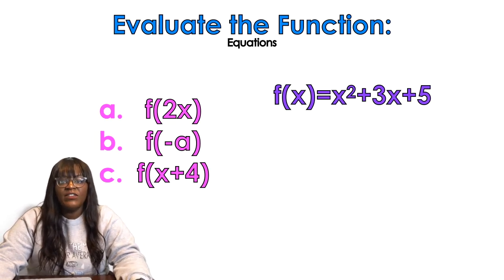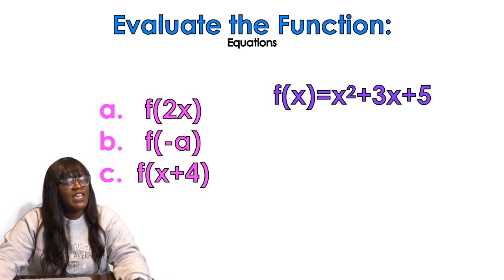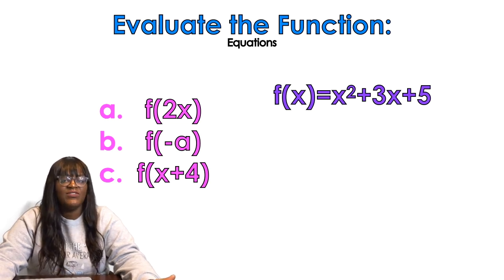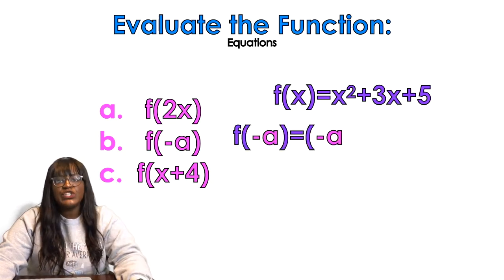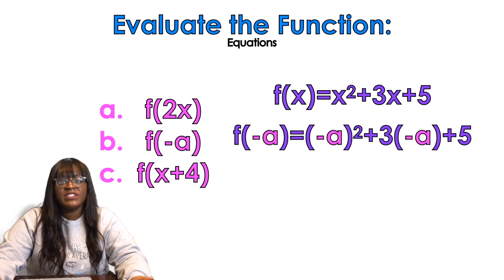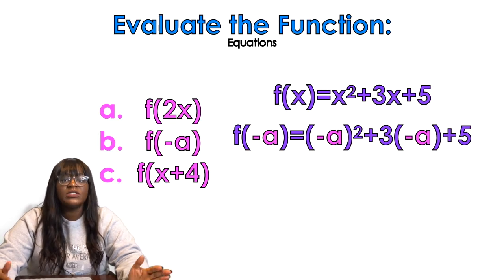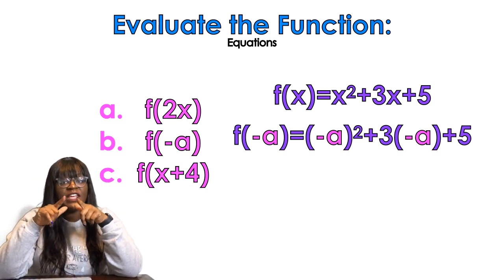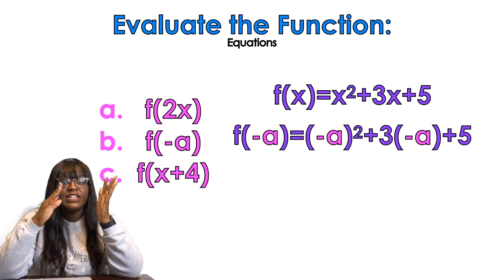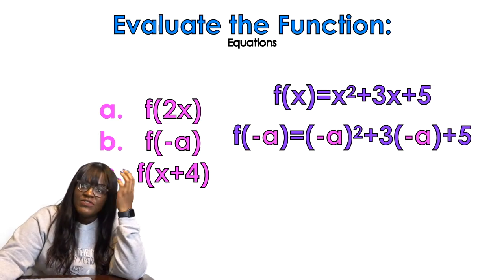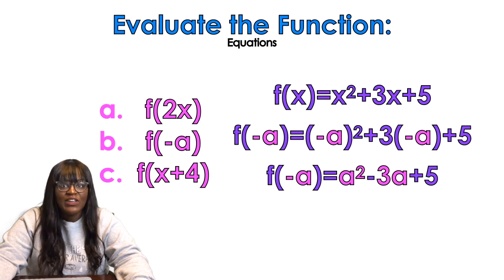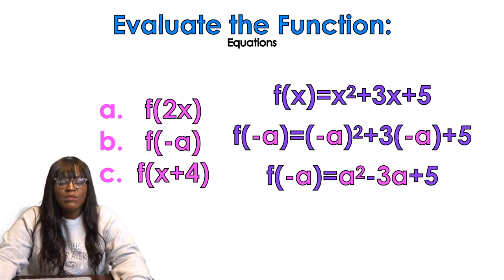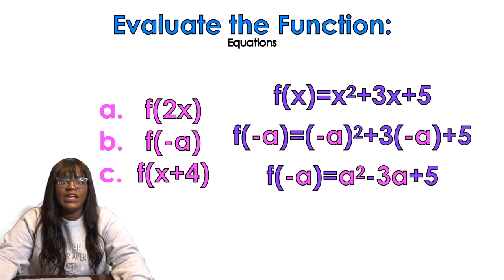Now I'm going to do f(-a). When I do f(-a), that means instead of a number, I'm plugging in negative a as my input. So that's going to look like f(-a) equals negative a squared inside parentheses—don't forget that—plus 3 times in parentheses negative a plus 5. When I simplify that, I'm going to get negative a squared: negative a times negative a gives me positive a squared, right? Then I'm going to multiply the middle term and simplify. And so that would be my answer.